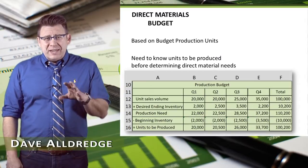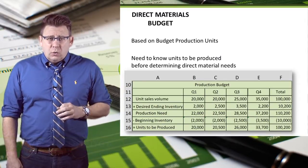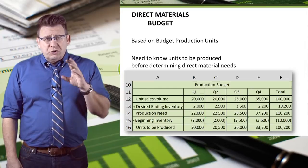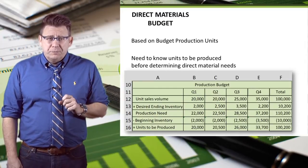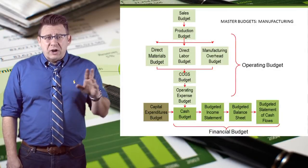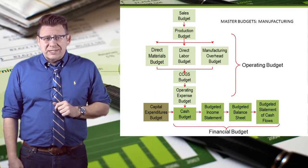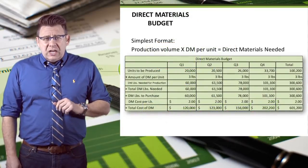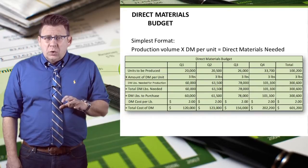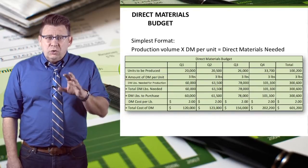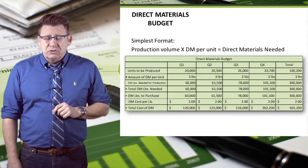The direct materials budget is based on data from the production budget. We need to know how many units we're going to produce before we know how much direct material will be needed. The direct materials budget is the third budget completed in the master budget process. In the simplest format, direct materials needed would be units to produce times direct materials used per unit.